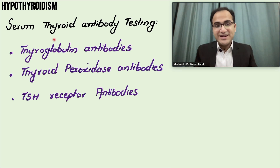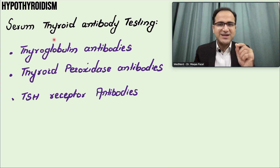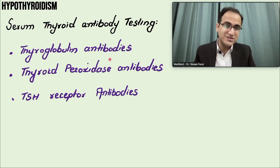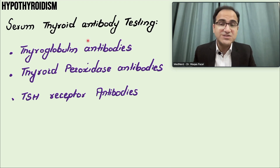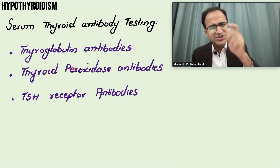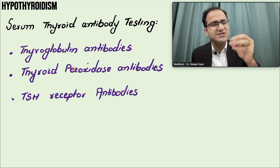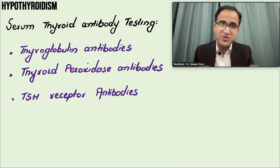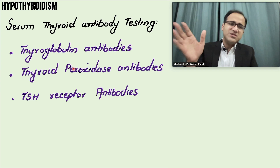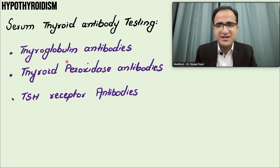In Hashimoto's thyroiditis and all autoimmune thyroiditis, you must remember anti-thyroid peroxidase antibodies and anti-thyroglobulin antibodies. These antibodies are positive in patients with Hashimoto's thyroiditis, especially thyroid peroxidase antibodies — a very specific antibody that destroys the thyroid gland and causes release of preformed thyroid hormones from the gland. Ultimately, the patient develops hypothyroidism due to destruction of the thyroid gland.